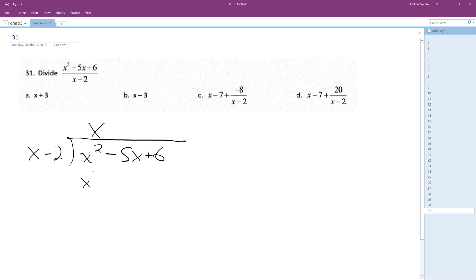So we get x squared, and then minus 2x. So change the signs, subtract, these cancel off, we get negative 3x remaining.